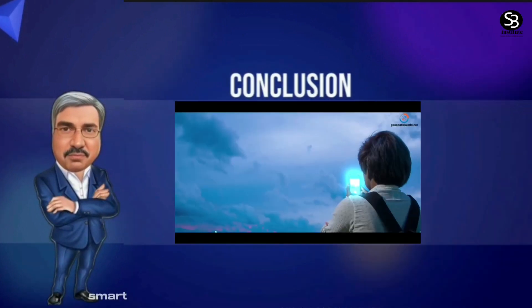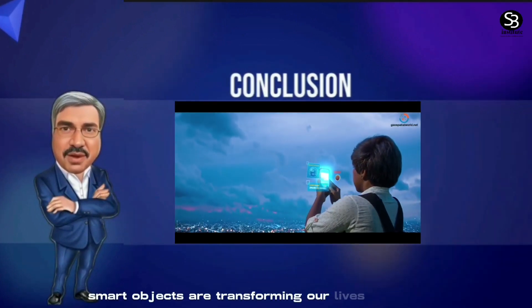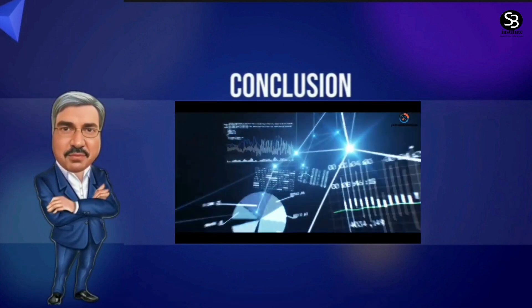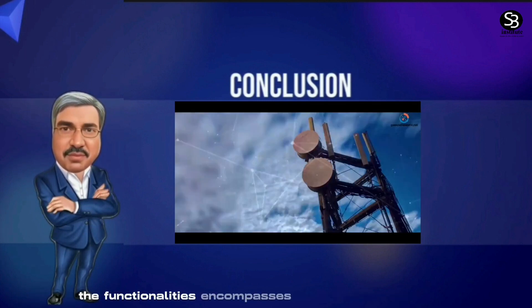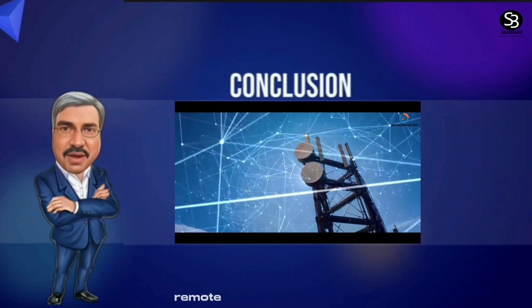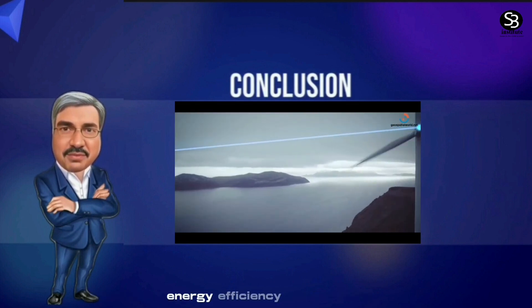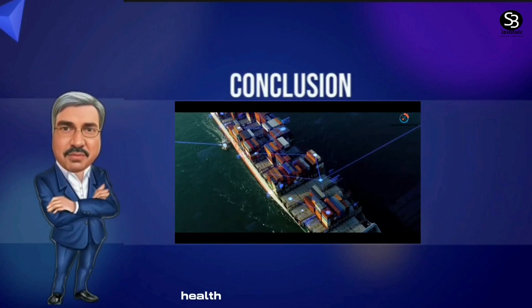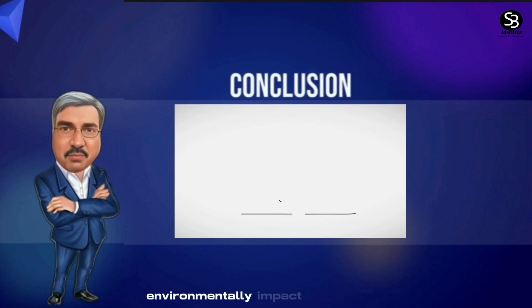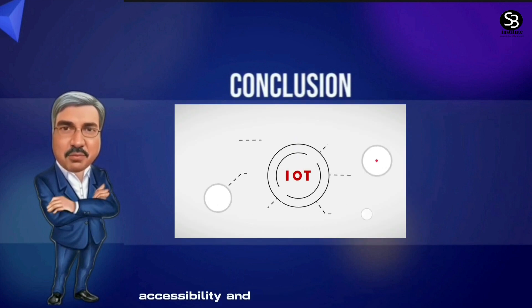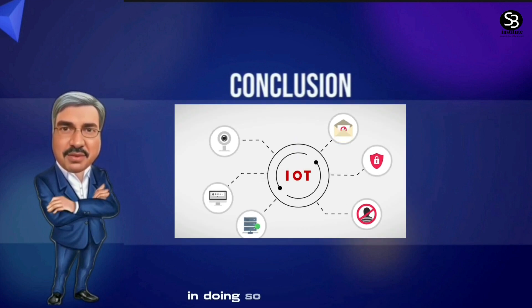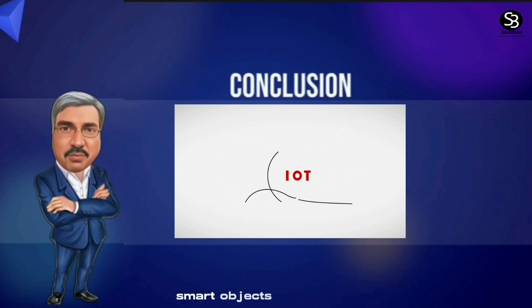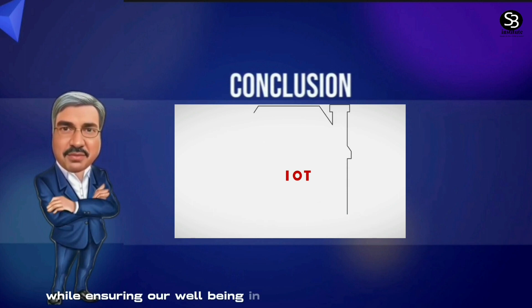Conclusion: Smart objects are transforming our lives in ways we could only have imagined a few decades ago. Their functionalities encompass automation, remote control, data analysis, energy efficiency, integration, customization, health and safety, entertainment, environmental impact, accessibility, and security. By harnessing the incredible potential of smart objects, we can ensure our well-being in the connected world.